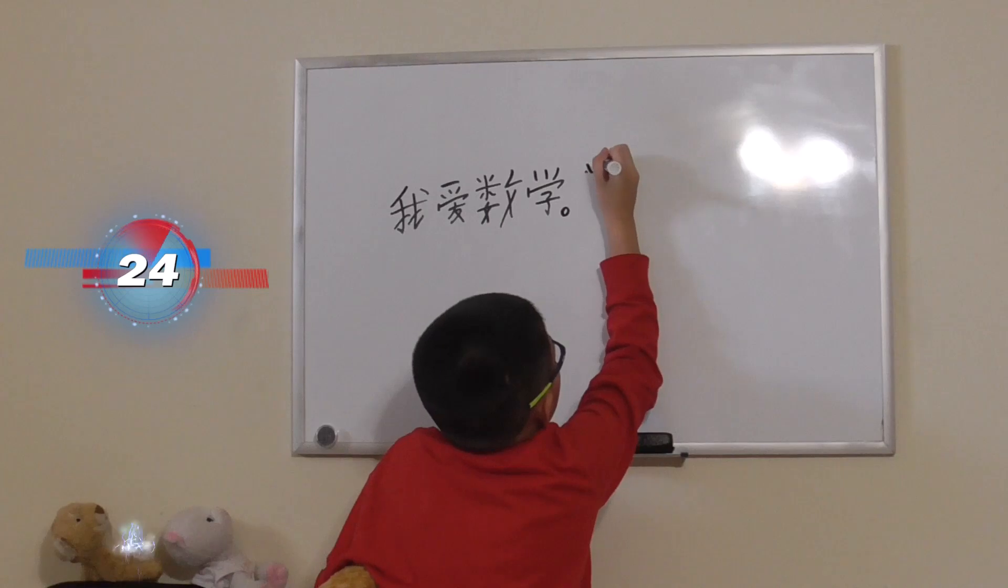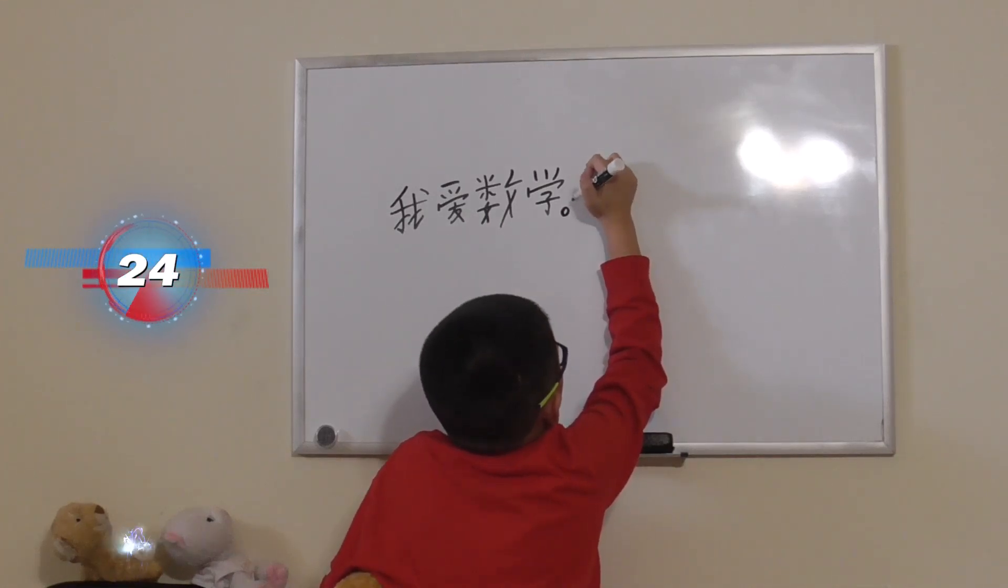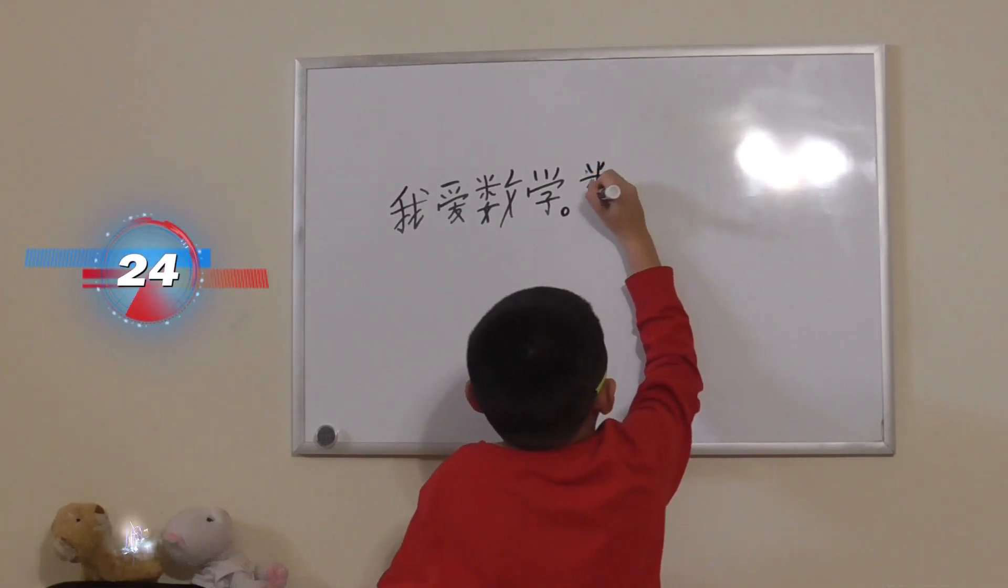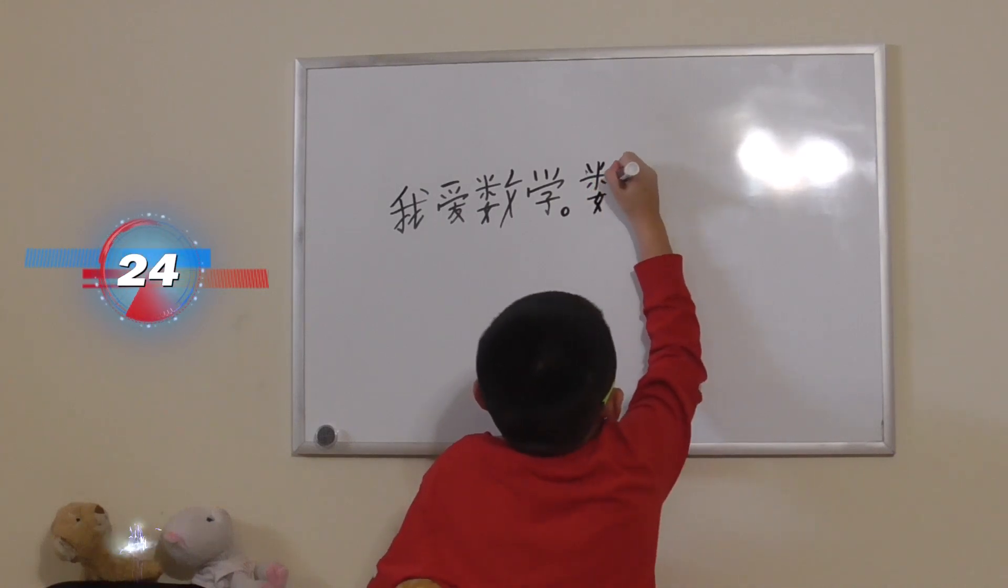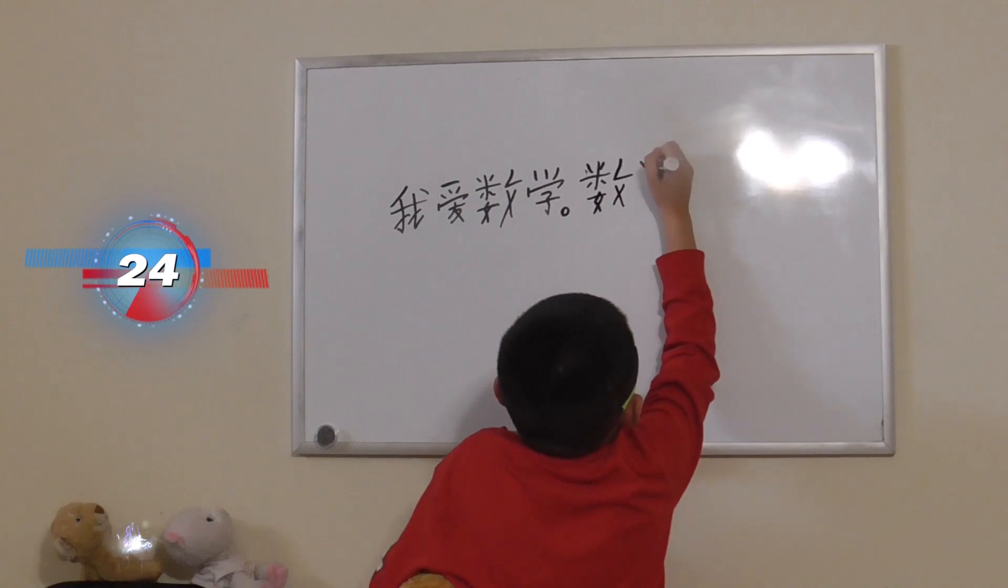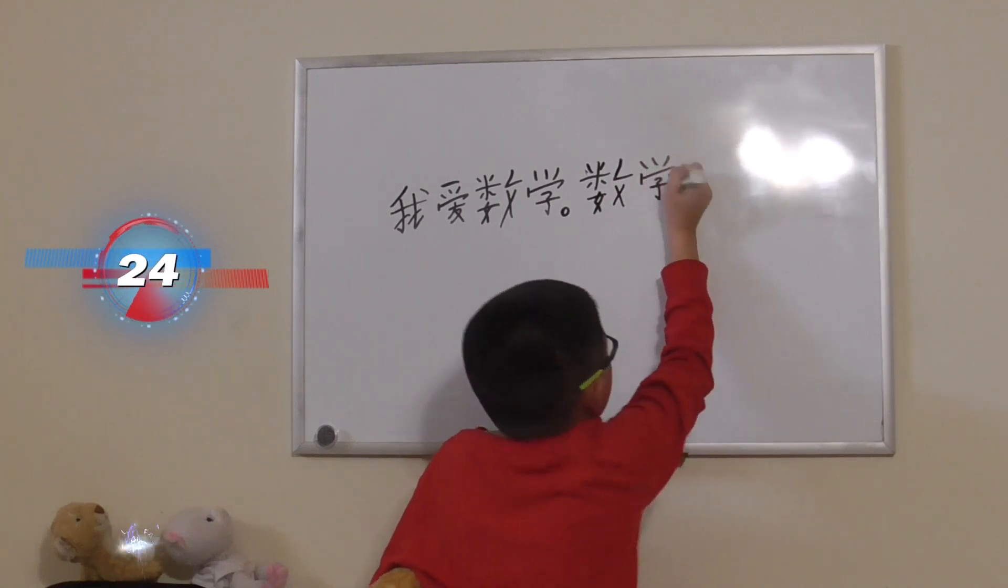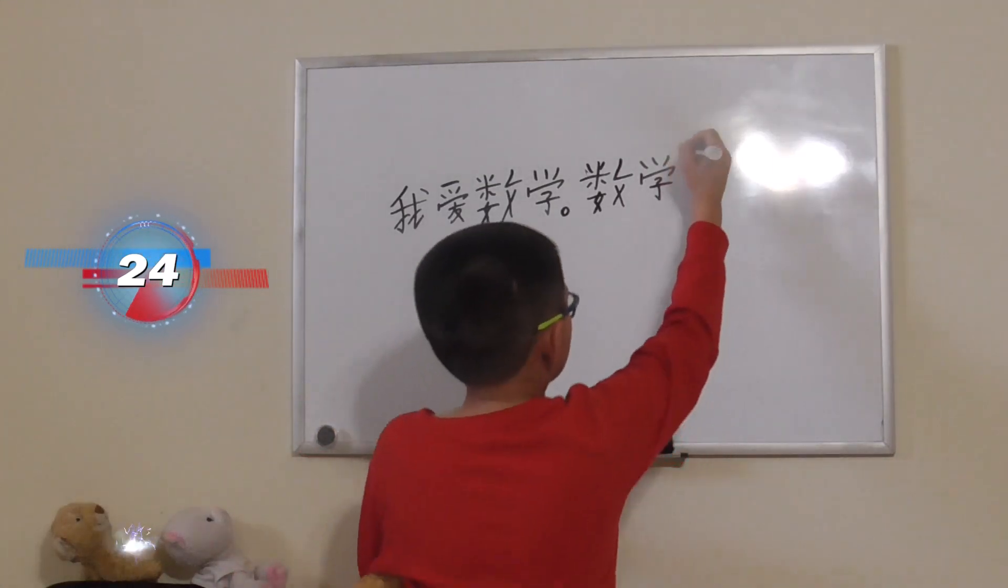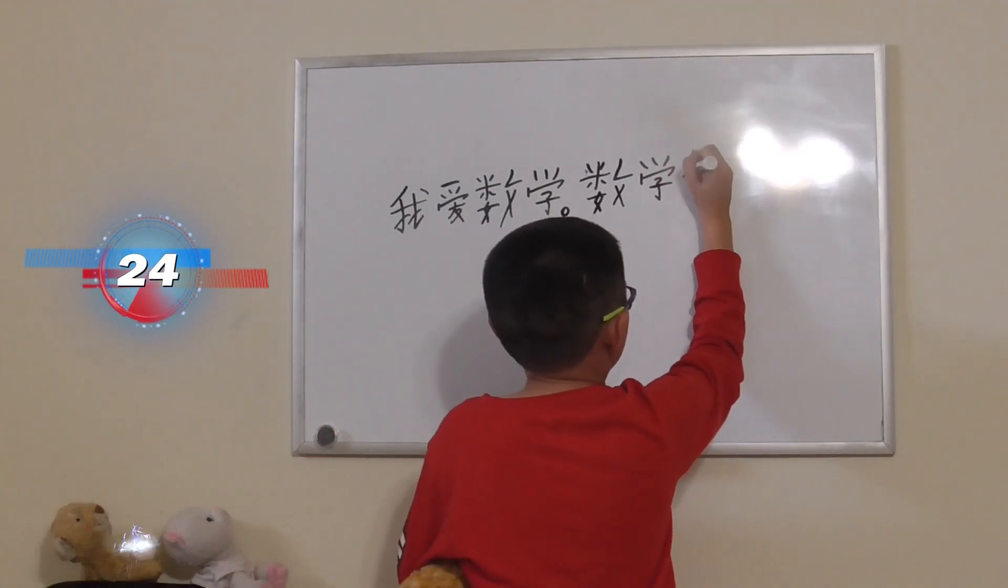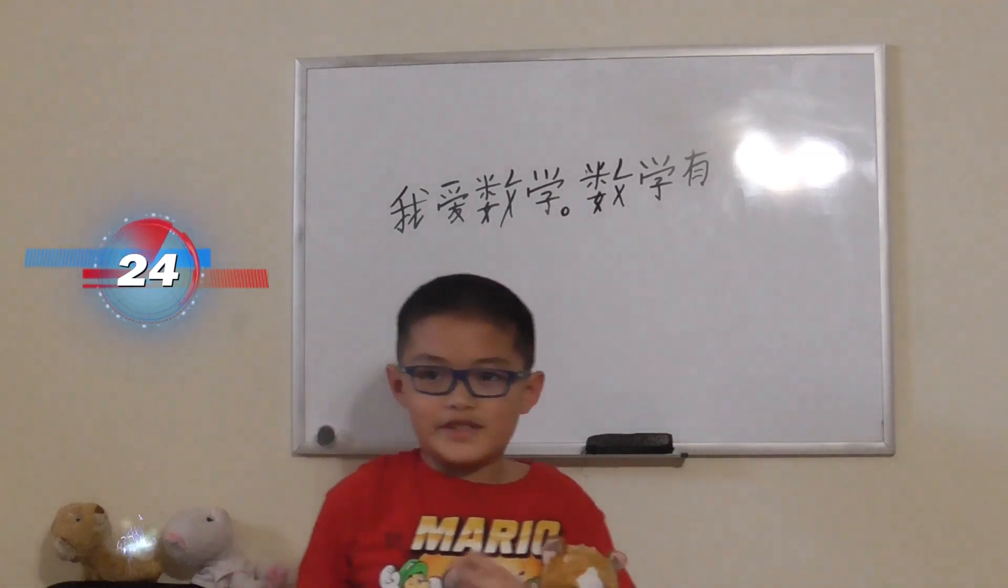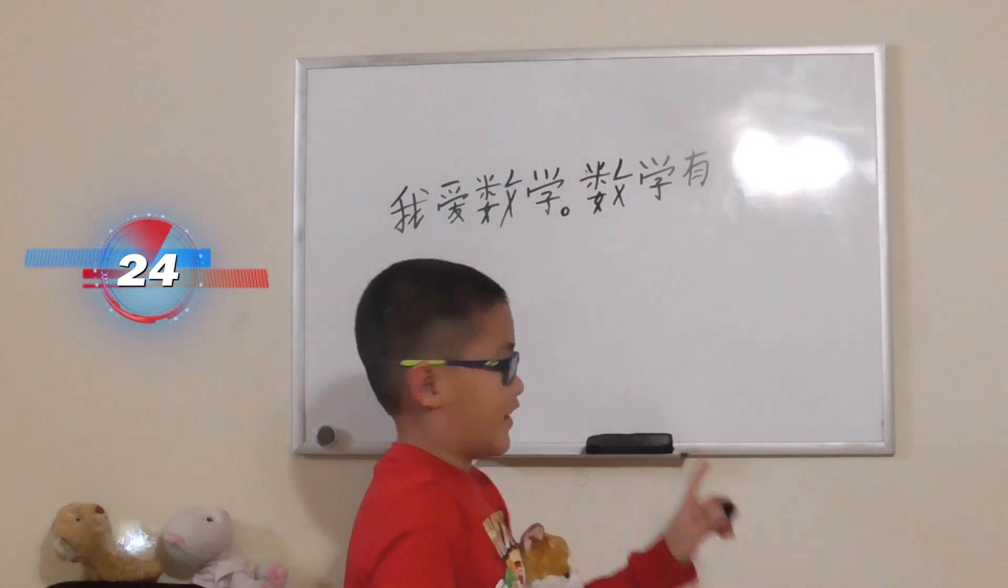数学, Math. 有, Yo means has or have. In this case, has.